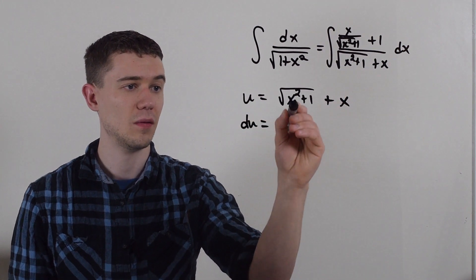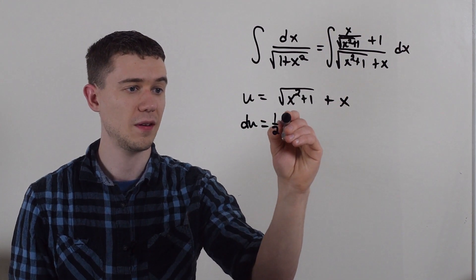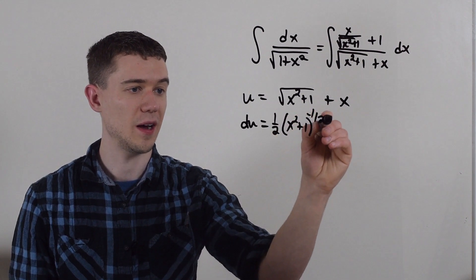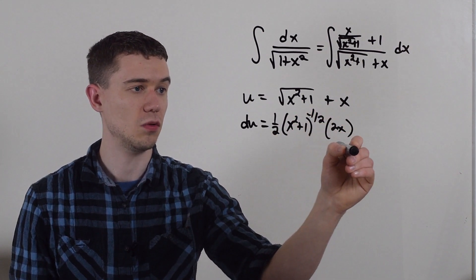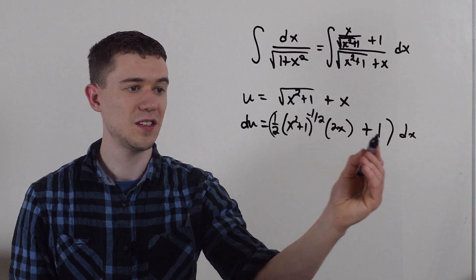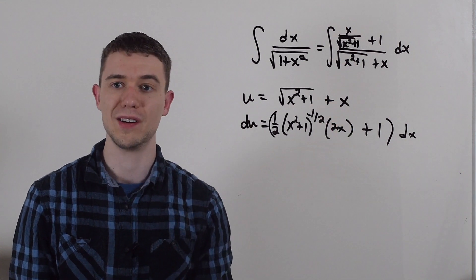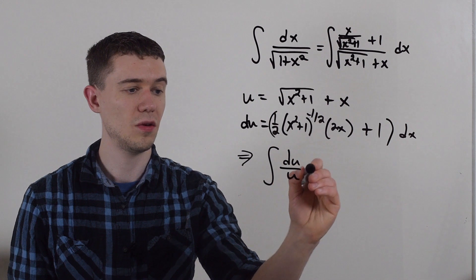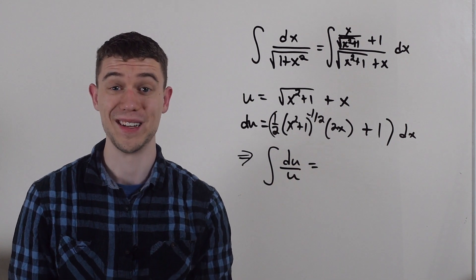Well, this would just be 1 half x squared plus 1 to the minus 1 half times 2x by the chain rule. And the derivative of x is just plus 1. But this is just a different way of writing the numerator. So our integral becomes du over u. I can integrate that.